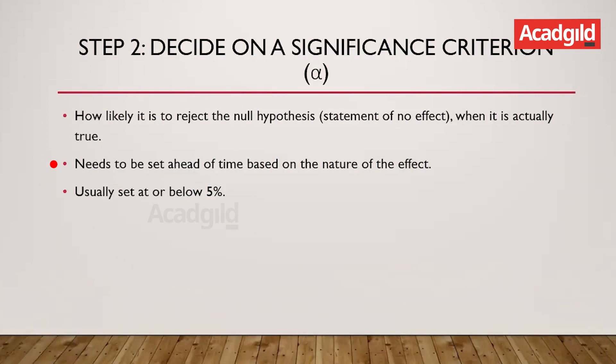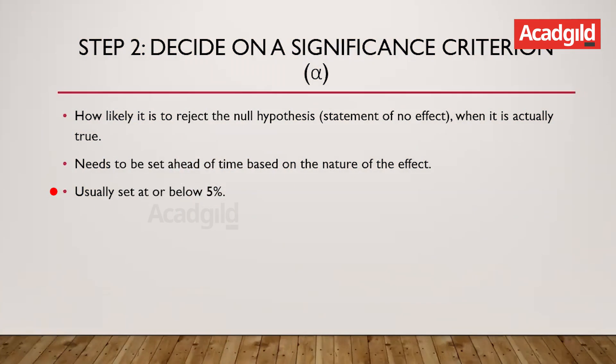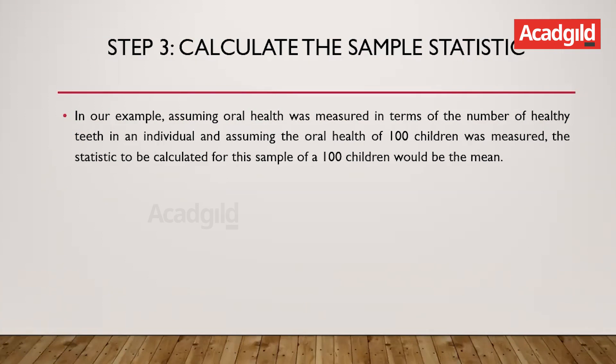This alpha value needs to be set ahead of time for us to be ethical in carrying out the hypothesis test. Usually these values are set very low, as we want to make no error in concluding whether there is an effect in the population or not. Therefore, these values are set to five percent or less.